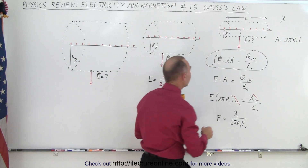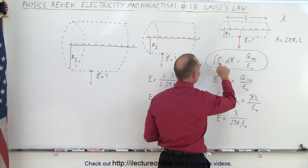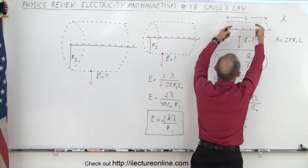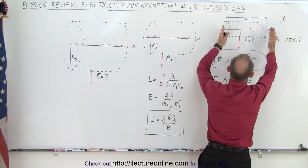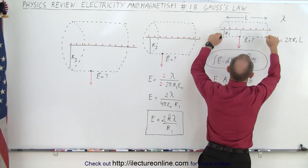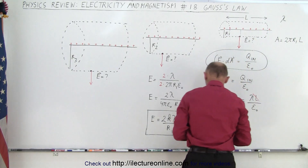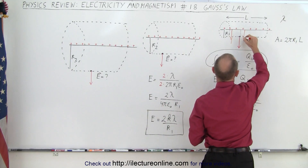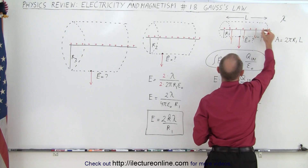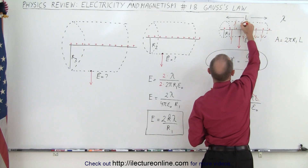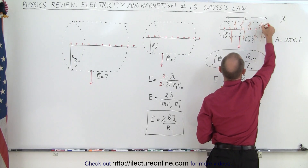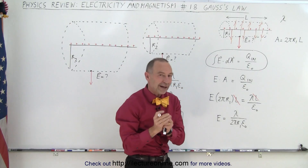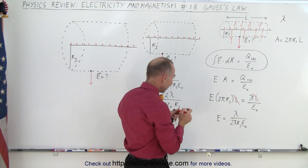The theory goes that if we multiply the electric field anywhere along the Gaussian surface — now only the side matters because the edges don't matter. There's no electric field going to the edges, only through the side. The electric field goes outward in all directions — up, down, sideways — and where it goes through the Gaussian surface is where we find the magnitude of that electric field.